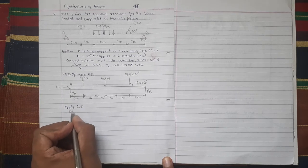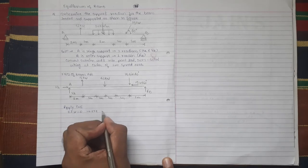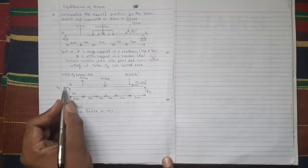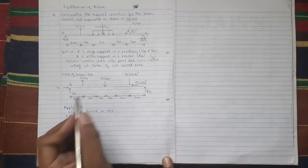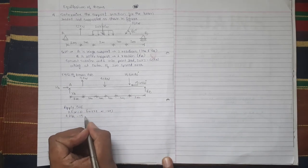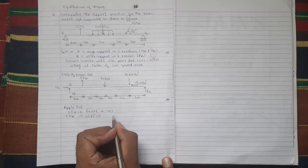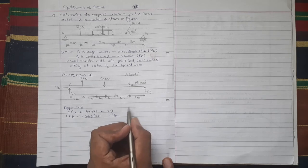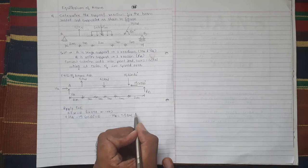Summation Fx = 0. Assumption: forces towards right positive, forces towards left negative. So here HA minus 15 cos 60 degree = 0. Therefore HA is equal to 7.5 kN. Positive value means our assumption HA towards right is correct.